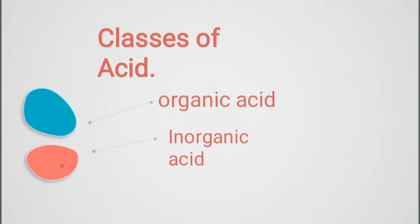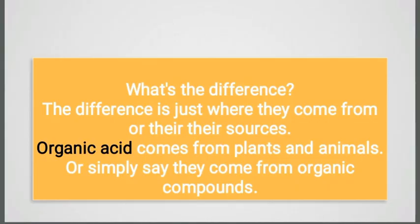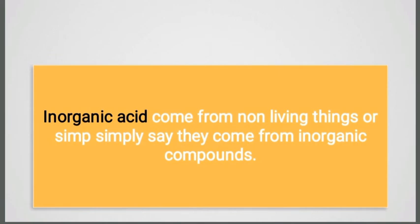Now let's classify acids as organic and inorganic acid. The only difference between organic and inorganic is source. Organic comes from natural sources like plants and animals, while inorganic acids come from inorganic compounds or non-living things.